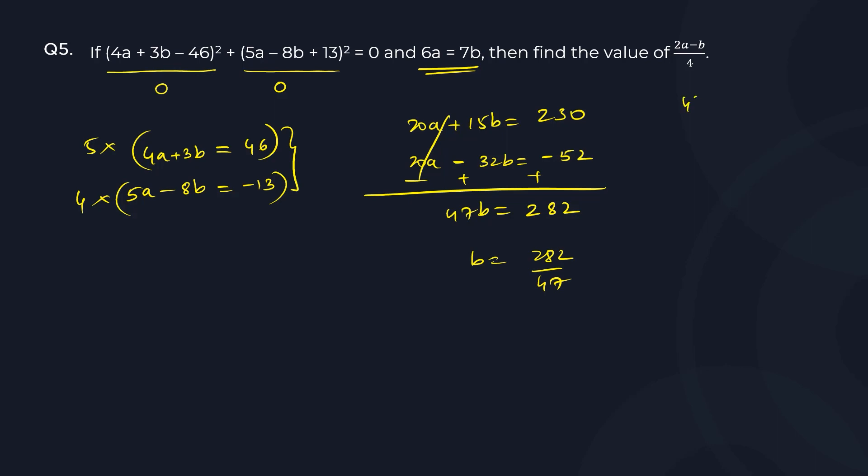Let's see how many times it goes - 47 into 282. Six times 47 is 282. Yes, so 47 goes six times. So b is 6.